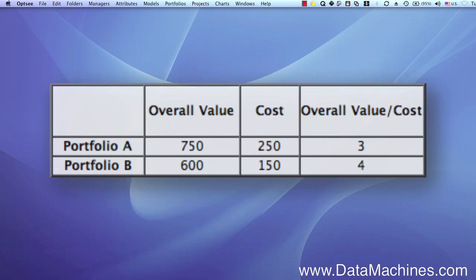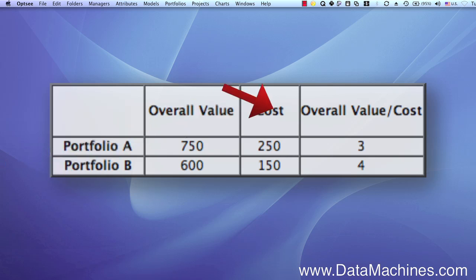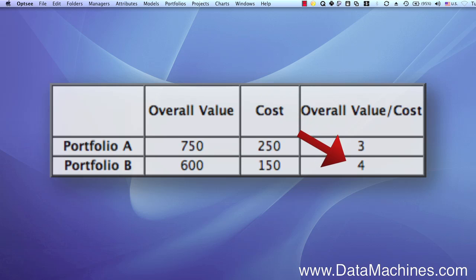For example, take these two portfolios. Portfolio A has an overall value of 750 and costs 250, whereas Portfolio B has an overall value of 600 and a cost of 150. Now, Portfolio A does have a higher return, but if you look at the ratio of overall value to cost, Portfolio B delivers 4 units of value per unit of cost versus Portfolio A, which delivers 3 units of value per unit of cost. So Portfolio B delivers the bigger bang for the buck than Portfolio A.